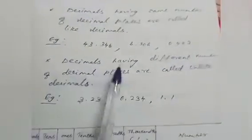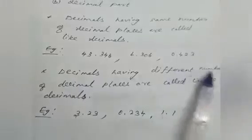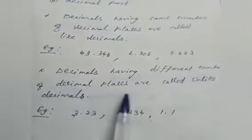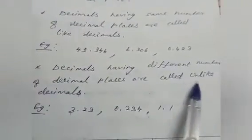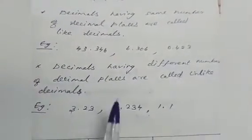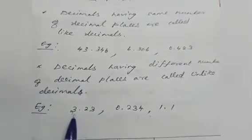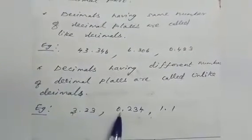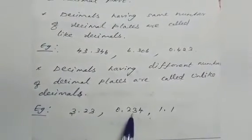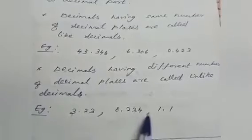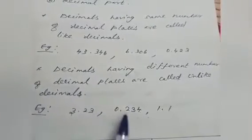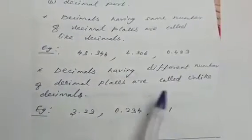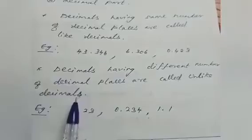Decimals having different number of decimal places are called unlike decimals. For example, 3.23, 0.234, and 1.1 — these decimal numbers are unlike decimals.